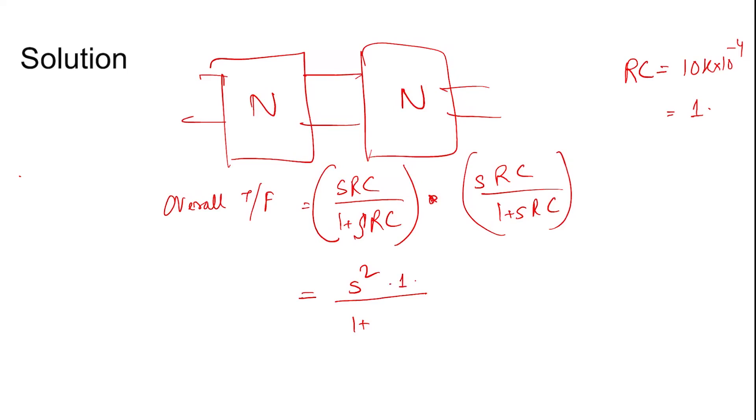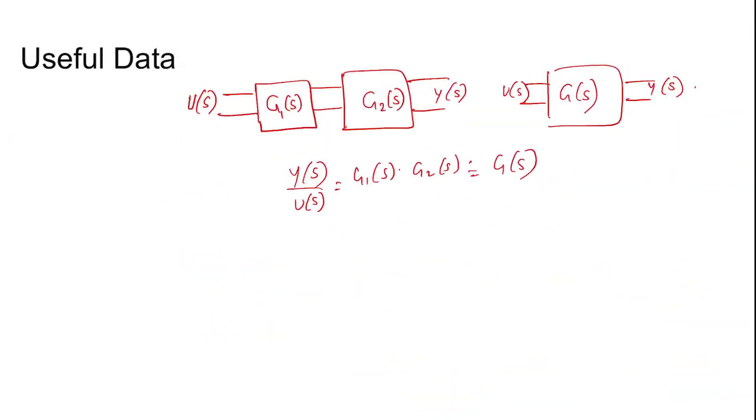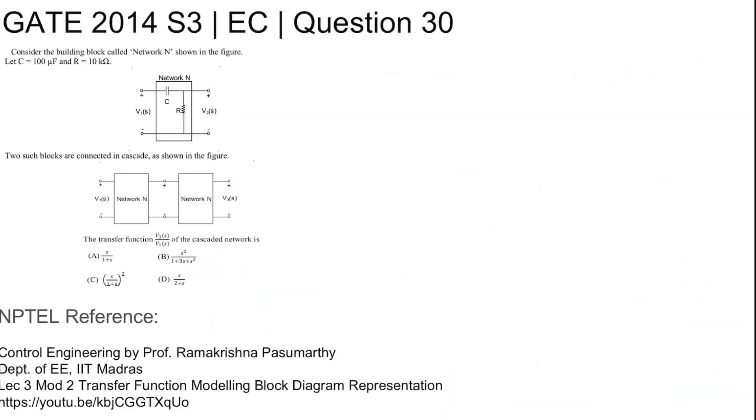So plugging in 1, we get s squared by 1 plus s whole squared. So s squared by 1 plus s squared is the overall transfer function. So C is the answer. Thank you.